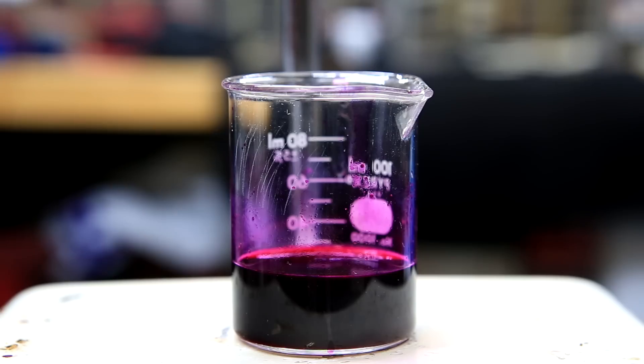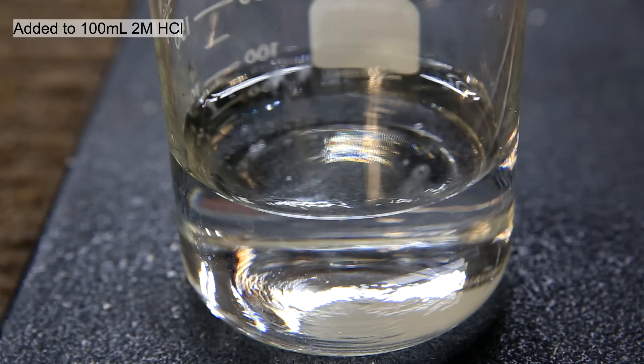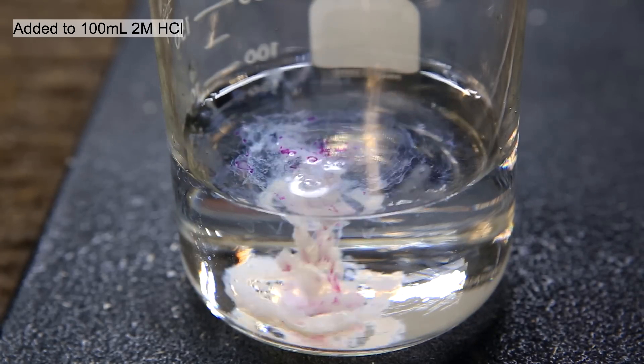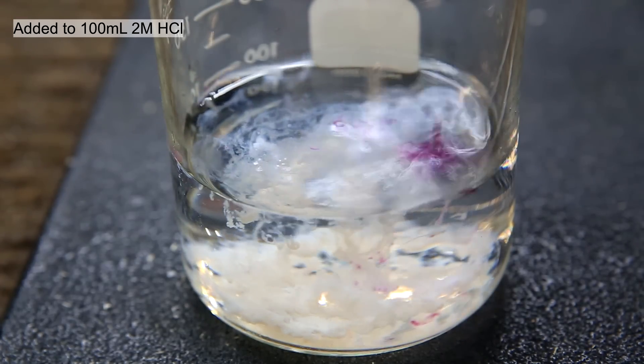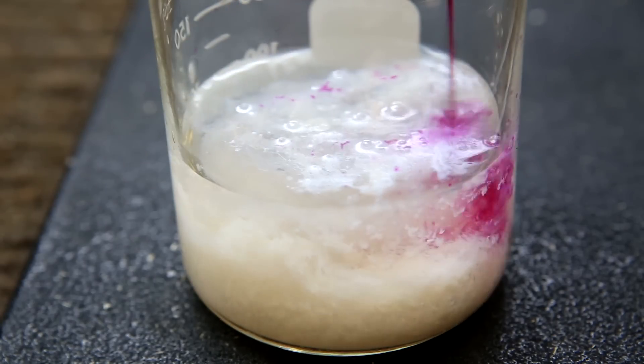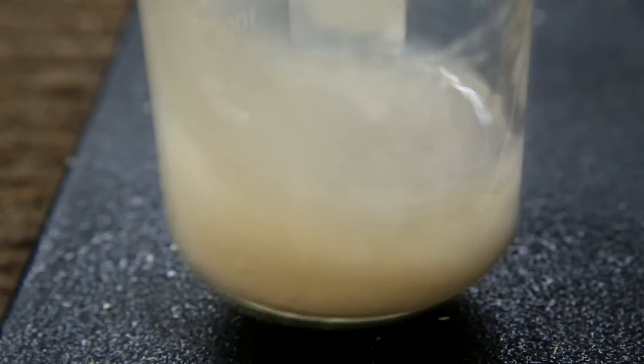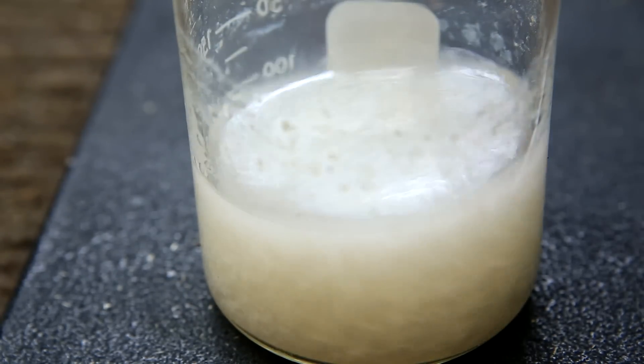This solution is very concentrated in phenolphthalein and is almost black. The phenolphthalein solution is then poured into 100 ml of 2 molar hydrochloric acid. This converts phenolphthalein back to its non-salt form, which is insoluble in water and causes it to crash out.